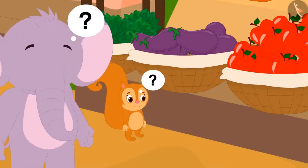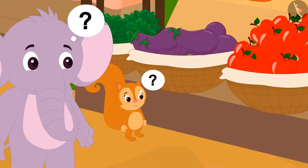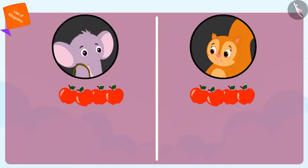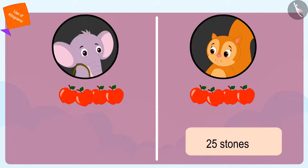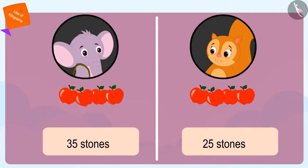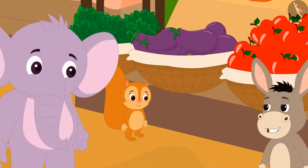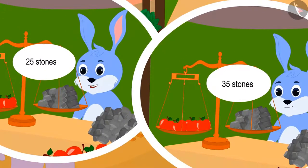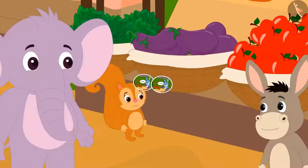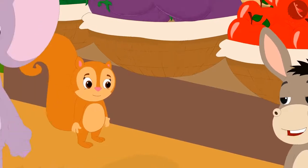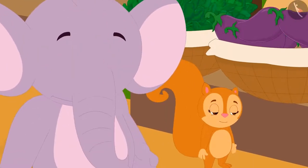Appu and Chanda were both shocked. How could this happen? Both of them bought four apples, yet how could Chanda's apples equal 25 stones while Appu's four apples weighed 35 stones? Right then, Bhoala was passing by. He saw Appu and Chanda upset and asked them the reason for their trouble. When they told him the whole story, Bhoala started laughing, and Chanda and Appu could not understand why.